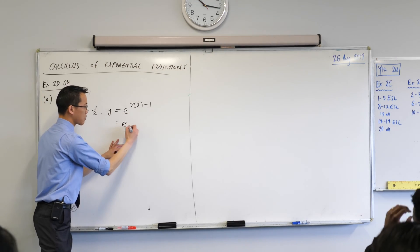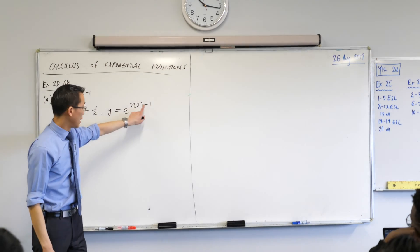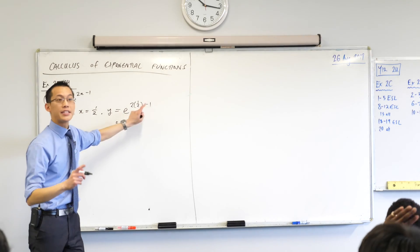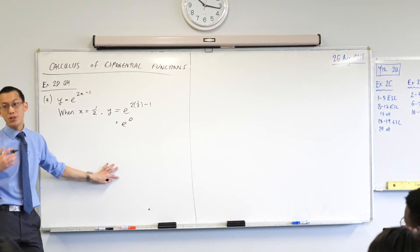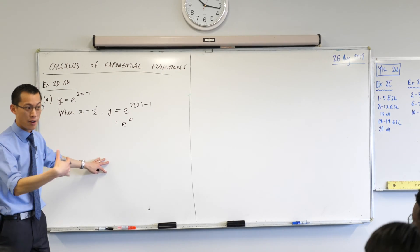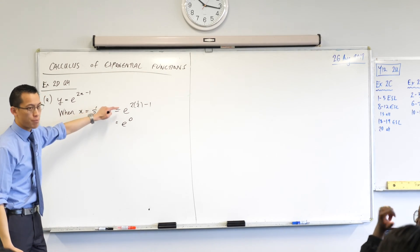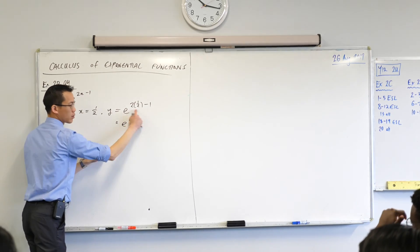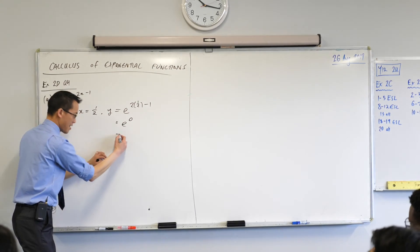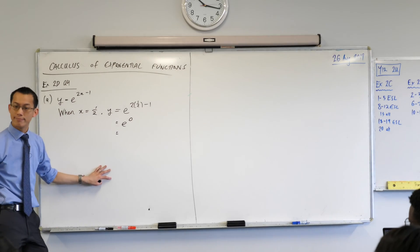All right, let's have a go. So I've now got e to the power of, what's going to happen up here? 2 times a half is 1, 1 take away 1 is 0, so that's that. Now I happen to know, and I hope you do as well, what e to the power of 0 is, but I think it's probably a bridge too far to skip right to that straight away. I want this line in here as a scaffold for my thinking, and then I evaluate. It's equal to 1.